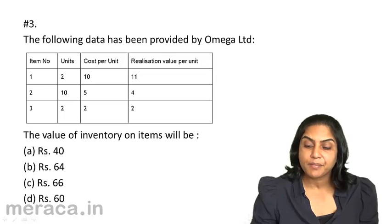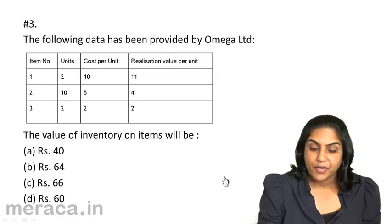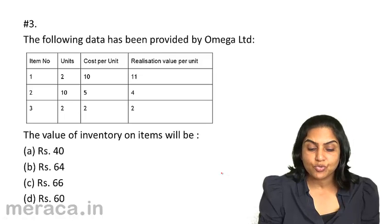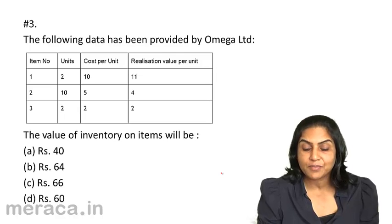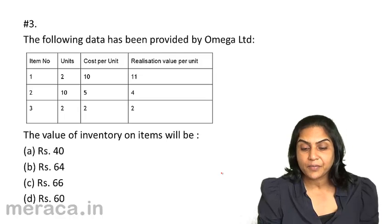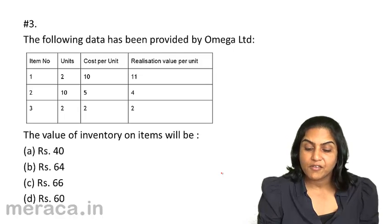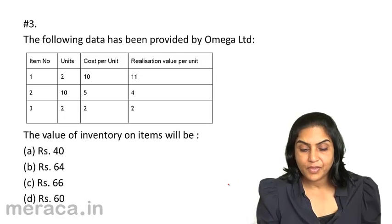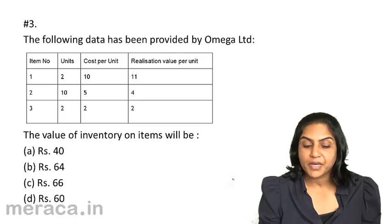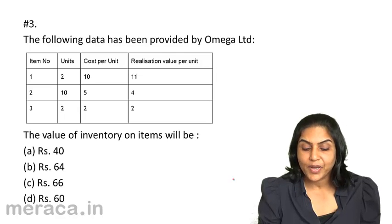The following data has been provided by Omega Ltd. We have three items. Item 1: 2 units, cost per unit Rs. 10, realization value per unit Rs. 11. Item 2: 10 units, cost per unit Rs. 5, realization value per unit Rs. 4. Item 3: 2 units, cost per unit Rs. 2, realization value per unit Rs. 2. The value of inventory on items would be Rs. 40, Rs. 64, Rs. 66, or Rs. 60. Stop for a minute and try to find out the correct value of inventory.